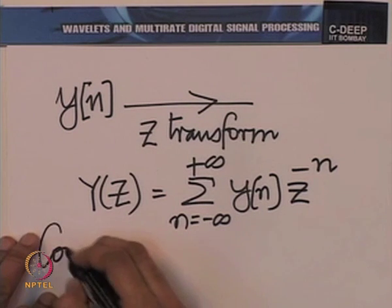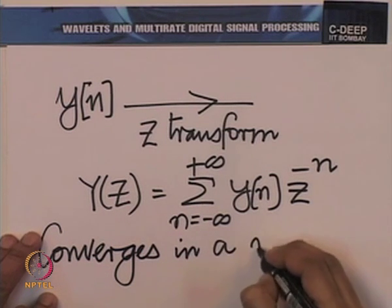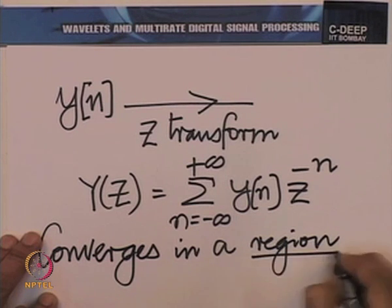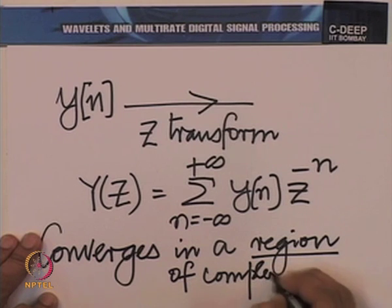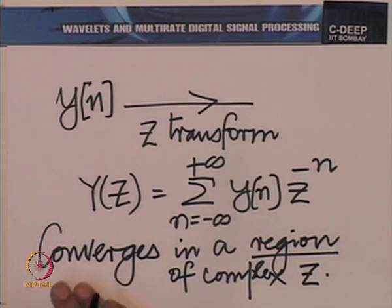We must remember that this converges in a region of the z-plane — it does not converge all over the complex z-plane. That region in which it converges is called the region of convergence. A Z-transform is always defined by an expression and a region of convergence. Both of them are absolutely necessary to complete the Z-transform.